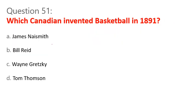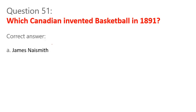Question 51. Which Canadian invented basketball in 1891? A. James Naismith. B. Bill Reid. C. Wayne Gretzky. D. Tom Thompson. Correct answer: A. James Naismith.